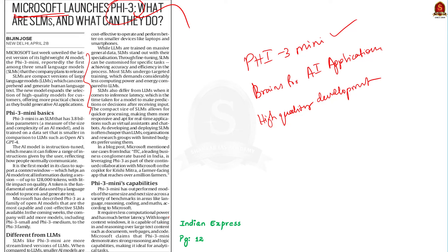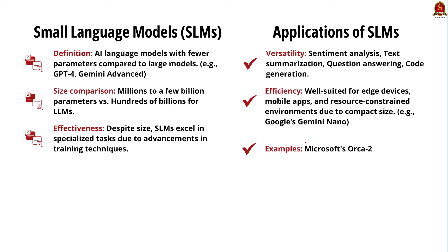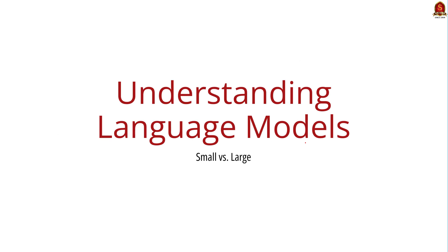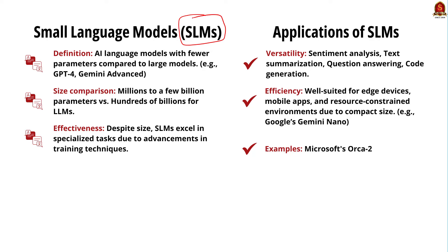In this context, let us learn about small language models and large language models. Language models are like the engines behind AI applications that deal with language. They are trained on a lot of existing text data to learn how to do things like classify text, answer questions, or generate text. Small language models (SLMs) are AI language models that contain significantly fewer parameters compared to their larger counterparts such as GPT-4 or Gemini Advanced. While large language models boast hundreds of billions of parameters, small language models typically range from a few million to a few billion parameters.